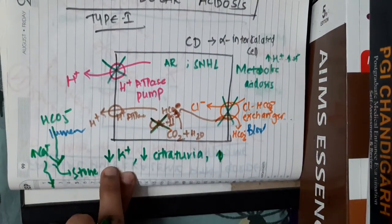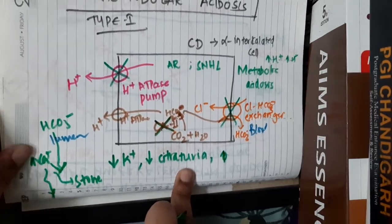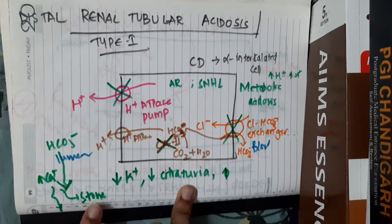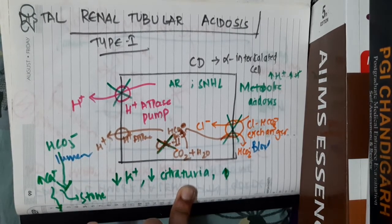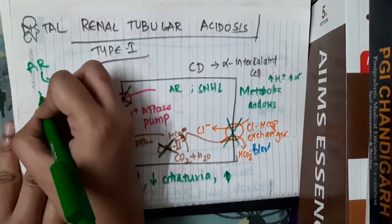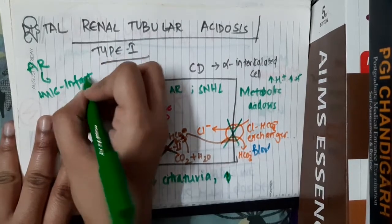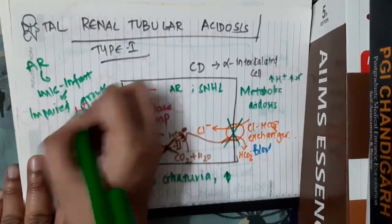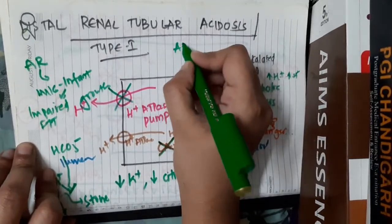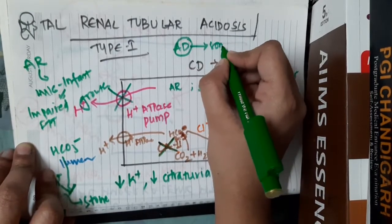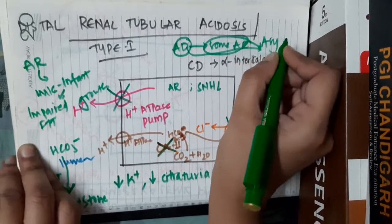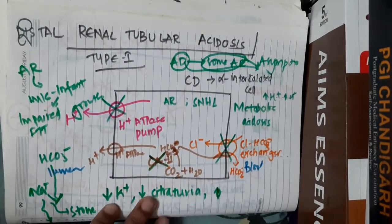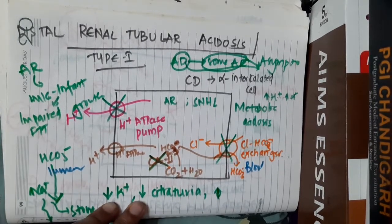Patients also present with nephrocalcinosis. This is an autosomal recessive condition most commonly seen in infants, who present with acidosis, impaired growth, and failure to thrive. There are also some autosomal dominant forms, most of which are asymptomatic, while most autosomal recessive forms are symptomatic, though some autosomal recessive conditions can be asymptomatic.